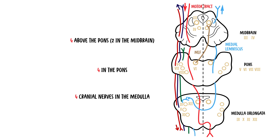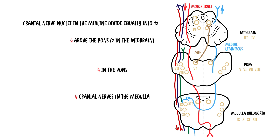The fourth rule is that the four cranial nerve nuclei in the midline can be remembered because they are divisible equally into 12, except one and two. The four cranial nerves in the midline that divide equally into 12 are cranial nerves three, four, six, and twelve. Cranial nerves five, seven, nine, and eleven are in the lateral aspects of the brainstem. Notably, the midline cranial nerves — three, four, six, and twelve — are all motor nerves.